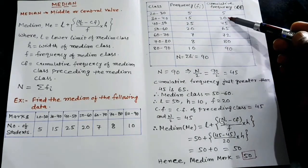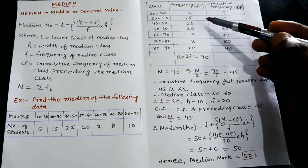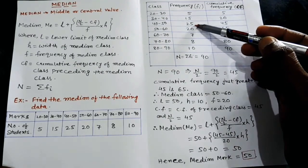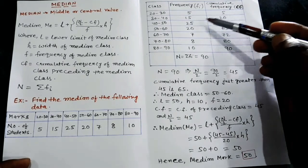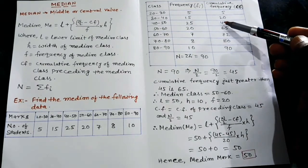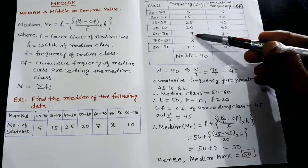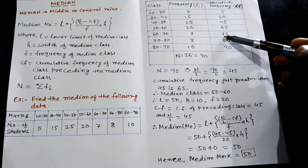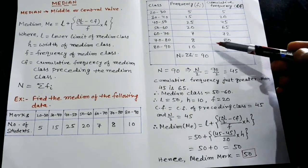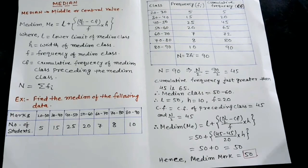Similarly, for the third class we add the second CF to the third frequency: 20 + 25 = 45. Continuing: 45 + 20 = 65, 65 + 7 = 72, 72 + 8 = 80, and 80 + 10 = 90. The sum of total frequencies is calculated next.